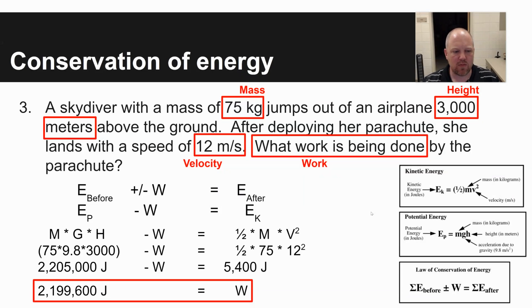And so your energy before is potential energy. You are solving for work, so there's some friction, there's some force that's acting on this parachute, and then you end up with kinetic energy at the end because you're moving.